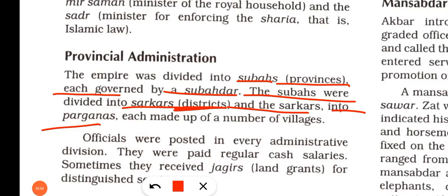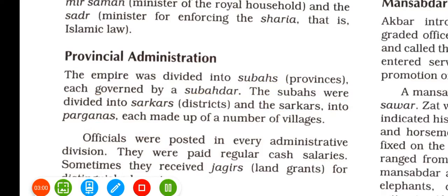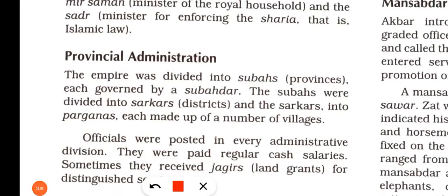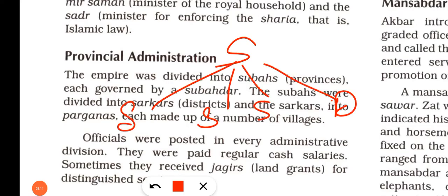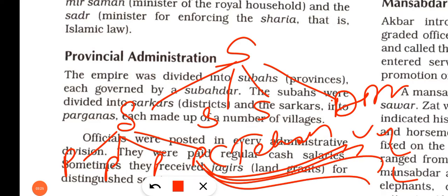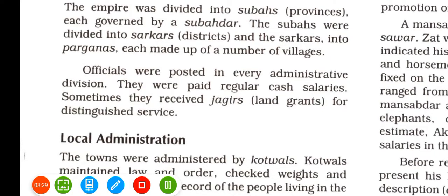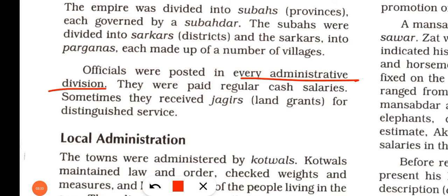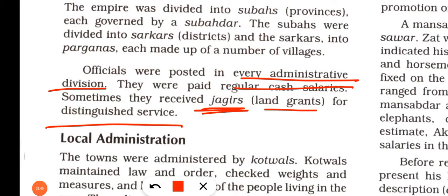Regarding provincial administration, the empire was divided into Subas (provinces), which were further divided into Sarkars (districts), and Sarkars were divided into Parganas (similar to today's tehsils), each made up of a number of villages. Officials were posted to each administrative division and given regular cash salaries; sometimes they also received jagirs — land grants — for distinguished services.